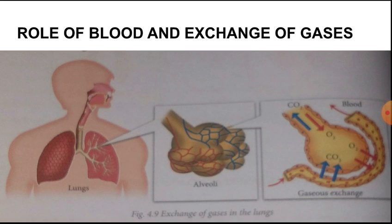Now, the role of blood and exchange of gases. Our blood has certain cells called red blood cells, or RBCs. The RBCs are disc-shaped and contain a protein called hemoglobin. Hemoglobin molecules contain iron, giving blood its characteristic red color. Hemoglobin molecules transport oxygen from the alveoli of the lungs to various tissues, and carbon dioxide from the tissues to the lungs.